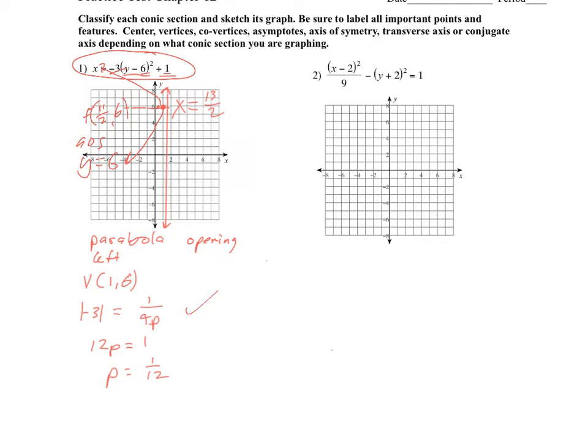Number 2 — this is a hyperbola. You know it's a hyperbola because we have two squares that are being subtracted. Since the x squared is the positive term, this is a hyperbola that's opening left and right.